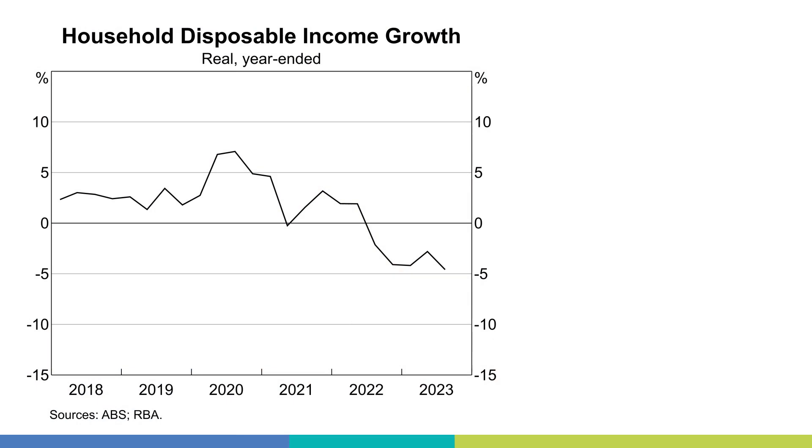So why has GDP growth slowed? The primary driver has been weak growth in household consumption. High inflation, higher interest rates and tax payments have weighed on households' incomes and led people to cut back on their spending. And we can take a closer look at household incomes to get a better idea of this.